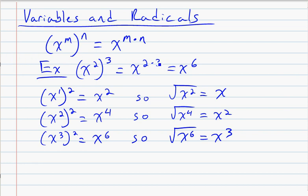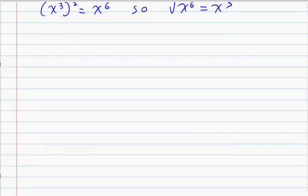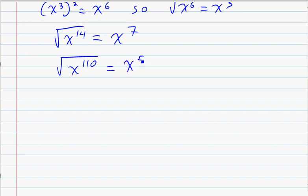In the end, this makes finding square roots of variables easier than finding square roots of numbers because the computation is not as hard to do. For example, the square root of x to the 14th power is just x to the 7th power. I can even take a bigger number. The square root of x to the 110th power equals x to the 55th power.